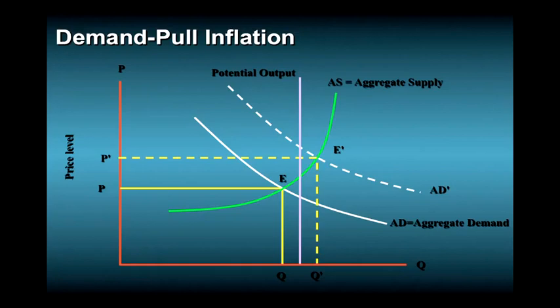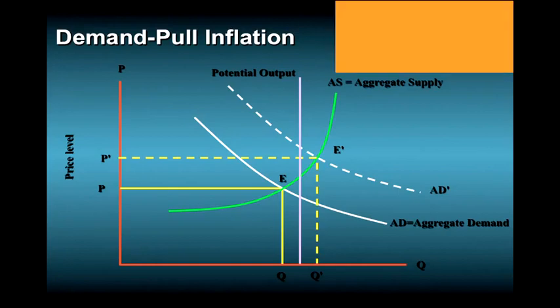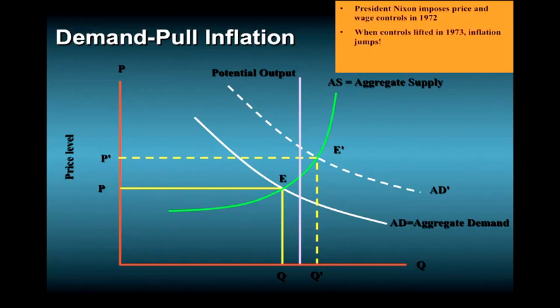In 1972, President Richard Nixon imposed price and wage controls and gained the nation a brief respite from the Johnson-era inflation. However, once the controls were lifted in 1973, inflation jumped back up to double digits, helped in large part by a different kind of inflation emerging — an inflation known as cost-push or supply-side inflation.